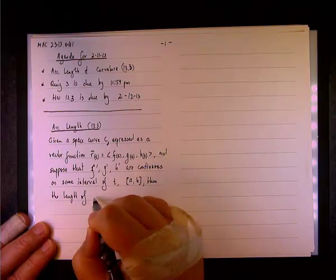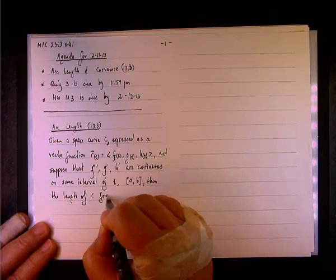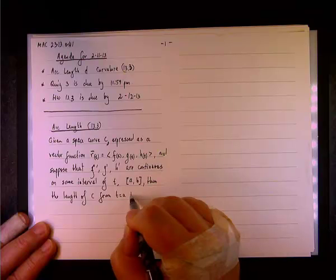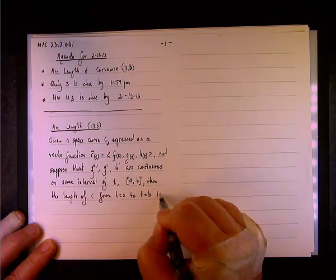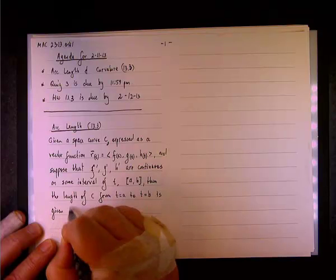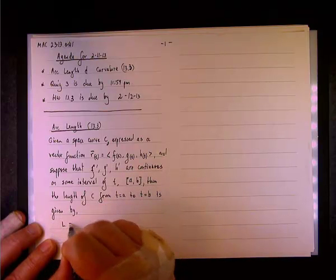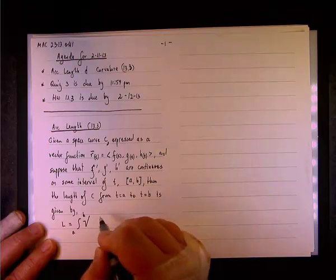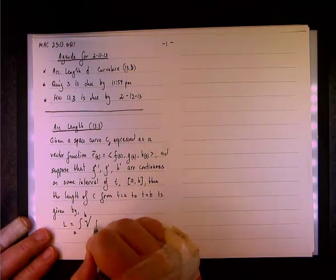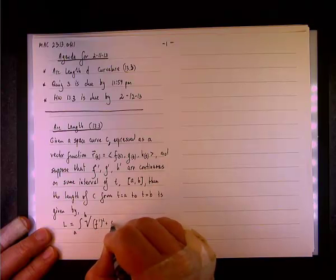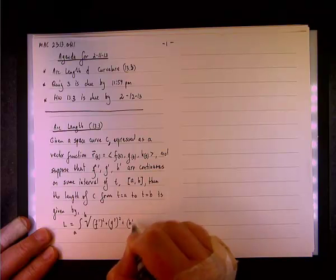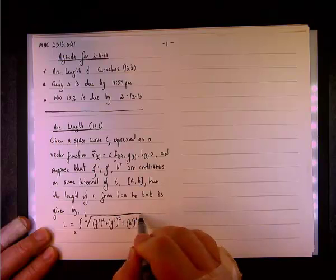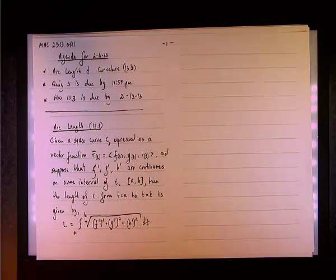the length of the curve of C from T equals A to T equals B is given by, and here's the formula that Kyle gave us. The first formula would be simply the square root and here we'll have F prime squared plus G prime squared plus H prime squared close to the square root n dt